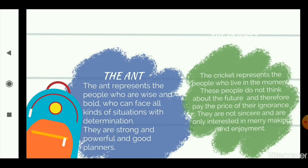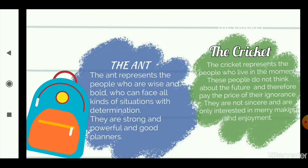Moving on to the conclusion — you have two characters here, the ant and the cricket. The ant represents people who are wise and bold, who think at the right time, who are very bold and keep on working very hard, very sincere in whatever they do. The ant represents people who can face all kinds of situations with determination. Determination means being very strictly committed to what you decide. People who determine to work hard are always successful in the end.